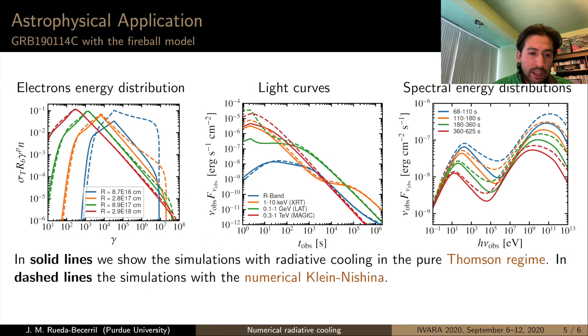And as an application, I have taken the best fit for the gamma ray burst observed by MAGIC last year in January, and I have taken the fireball model for gamma ray burst and evolved a distribution of particles with my code, taking into account the Klein-Nishina corrections. So in these plots we can see in solid lines the simulations considering only Thomson cooling and in the dashed lines we can see the results of the simulations with the Klein-Nishina corrections.